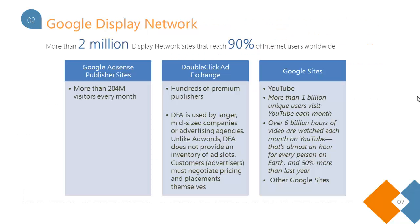There are three kinds of websites that generally come under the Google Display Network. The first is your Google AdSense publisher sites — these are the sites that a normal advertiser would target directly through your AdWords interface. It has more than 204 million visitors every month.